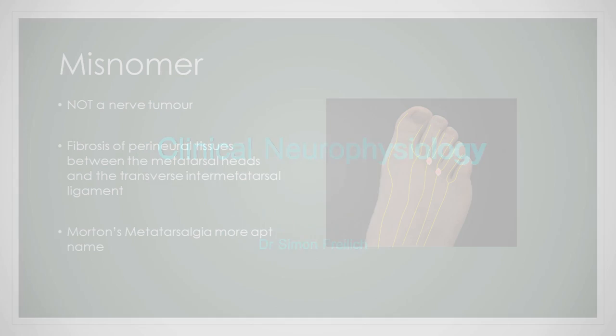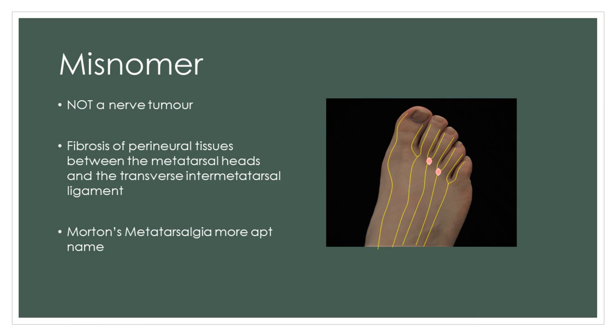The first thing to say about this condition is that its name is a little bit misleading. It kind of sounds like something really nasty, perhaps a tumour of some kind, and in fact it is absolutely not a nerve tumour. What it is is some fibrosis of the perineural tissues between the metatarsal heads and the transverse intermetatarsal ligaments. So in effect it's an inflammatory condition of the tissues surrounding the nerves that go to the digits of the toes. A better name which this condition should really go by is Morton's metatarsalgia, which is far more apt for this condition.